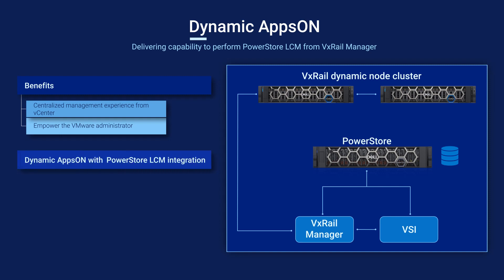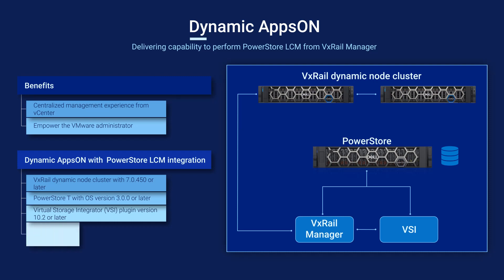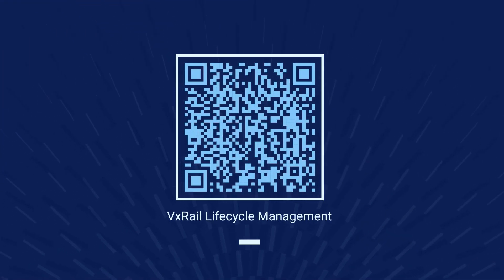Let's discuss what's needed for a dynamic apps on solution with PowerStore LCM integration. First, you need a VxRail dynamic node cluster running 7.0.450 or later, a PowerStore T array running 3.0.0 or later, and the Virtual Storage Integrator plugin (VSI) version 10.2 or later. With those in place, a user can manage VxRail and PowerStore from vCenter using the VxRail Manager and VSI plugins.